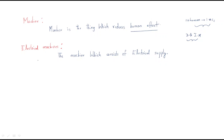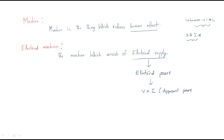Now, what are electrical machines? The name itself tells us that electricity must be involved. An electrical machine must have an electrical supply, meaning it must take electrical power. Electrical power is simply voltage multiplied by current (V × I), and this is called apparent power. When this voltage and current are involved in a machine, that machine is called an electrical machine.